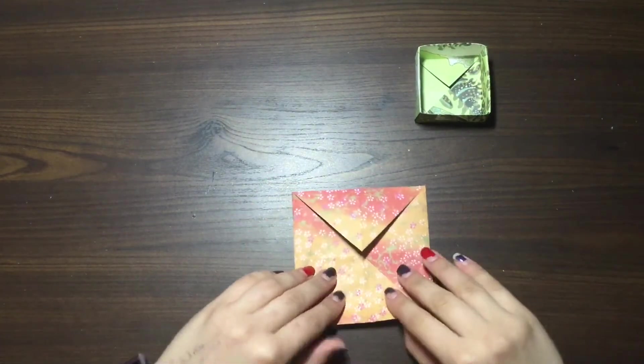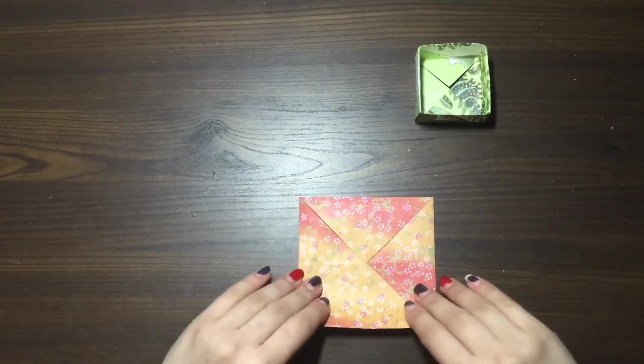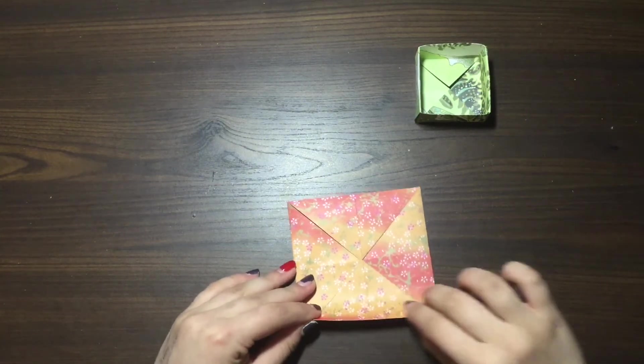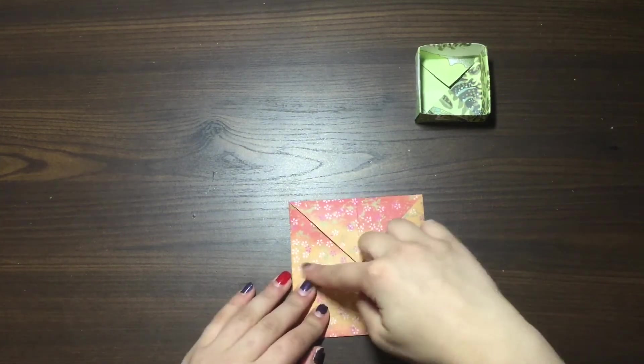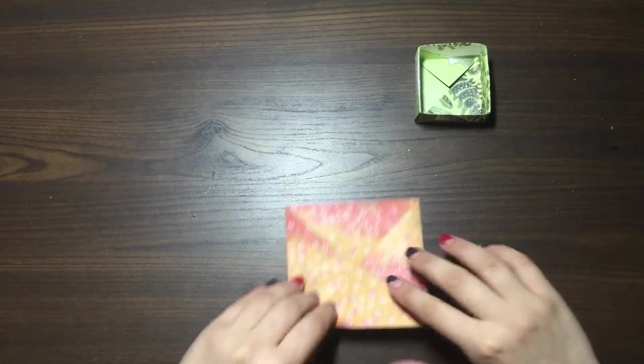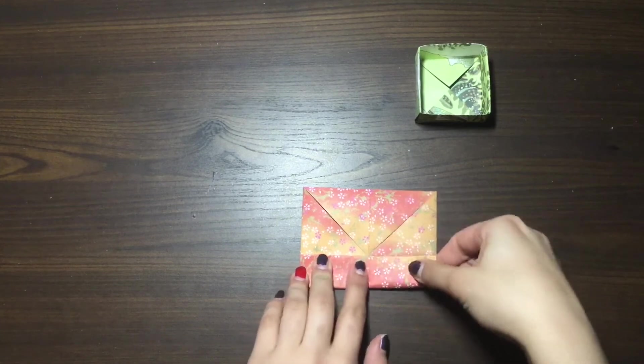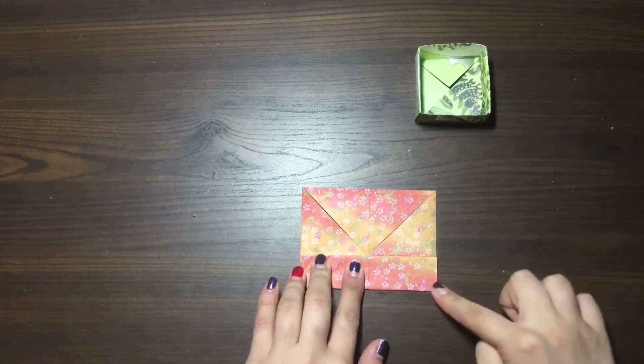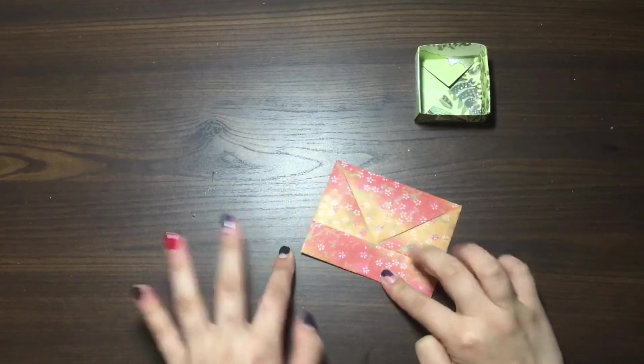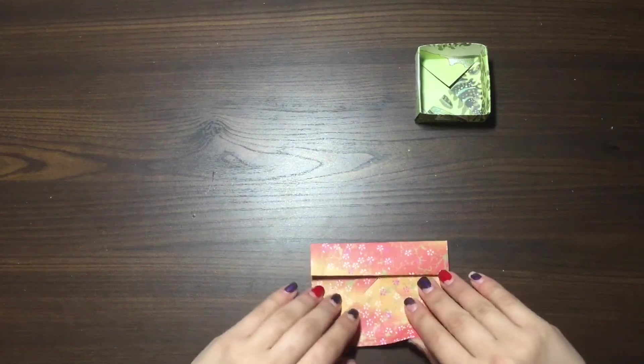So we're going to take this, so it looks like a square now, and we're going to take the bottom edge, and we're going to fold this part to the center, where you can see the line of the crease that we've already made. So we're going to take this, and we're just going to fold it right up to the middle.